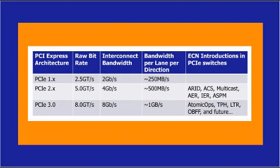So what is PCI Express Gen3? PCI Express Gen3 is the evolution of the PCI Express standard that doubles the performance from the previous generation up to 8 gigabit per second. It is important to also note that while Gen3 speeds are supported, so is backwards compatibility to the existing Gen2 and Gen1 speeds.